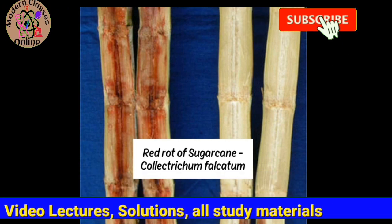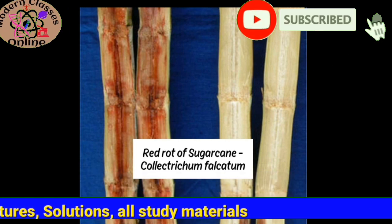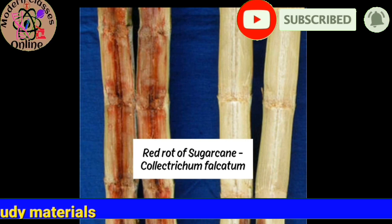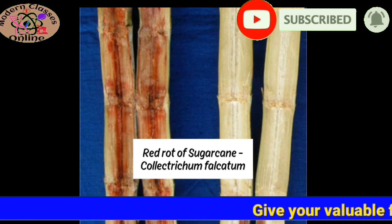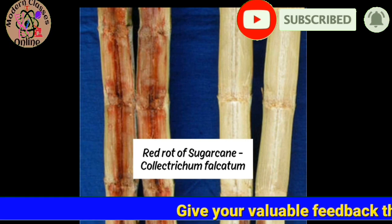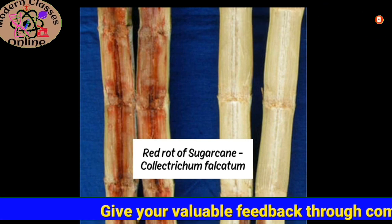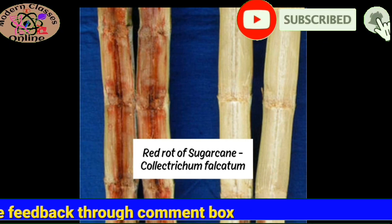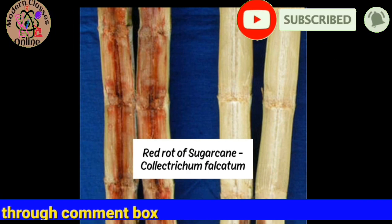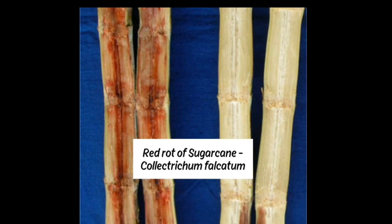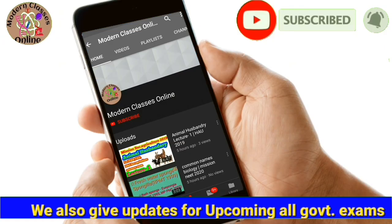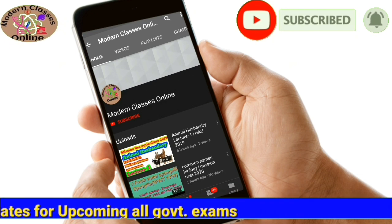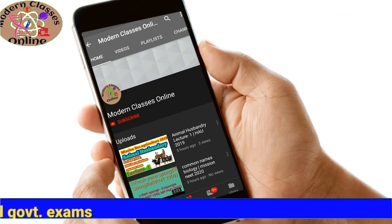When we cut the sugarcane it is red inside — this is a disease. This is the red rot of sugarcane, which is called Colletotrichum falcatum. Modern Classes Online Study Channel — subscribe to the top.